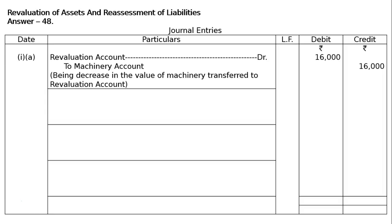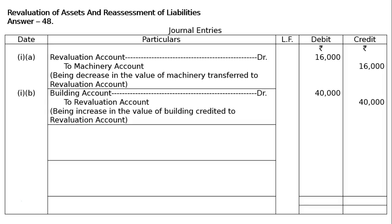Part 1B: Building increased by 40,000. Building Account debited Rs. 40,000 to Revaluation Account Rs. 40,000. Increase in the value of Building is credited to Revaluation Account, because increase in Building is a profit for the firm.